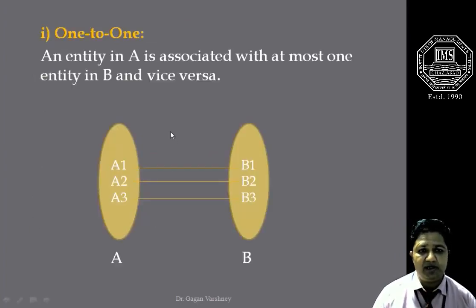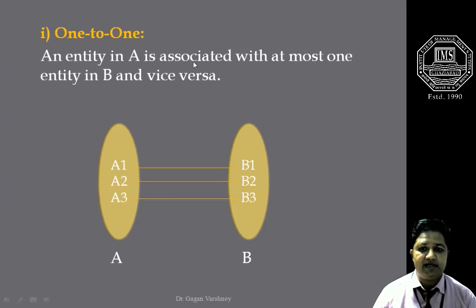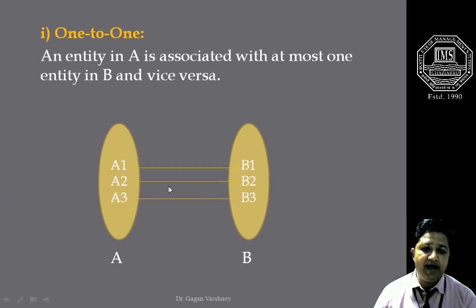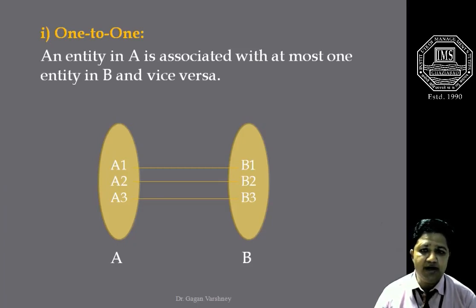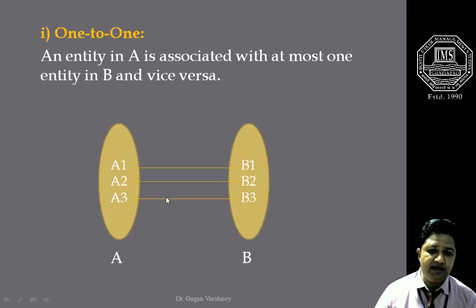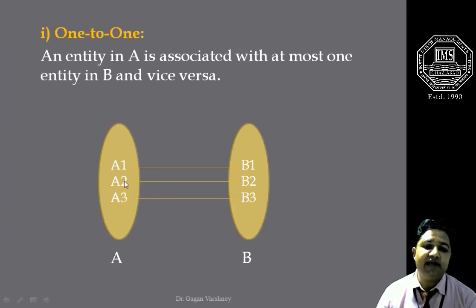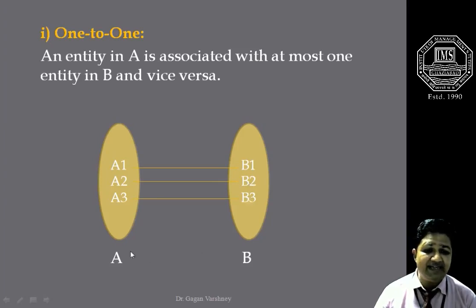Number one: one-to-one mapping cardinalities. In one-to-one mapping cardinalities, an entity in entity set A is associated with at most one entity in entity set B, and an entity in entity set B is associated with at most one entity in entity set A. As it is clear from the figure, entity set A contains entities A1, A2, and A3, while entity set B contains entities B1, B2, and B3, and each entity of entity set A is associated with each entity of entity set B at most one.